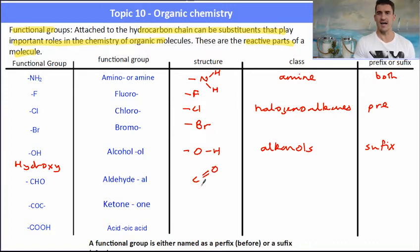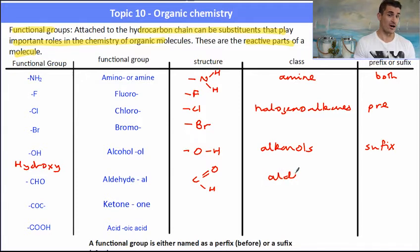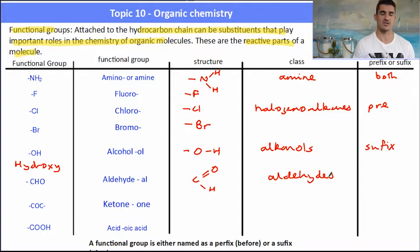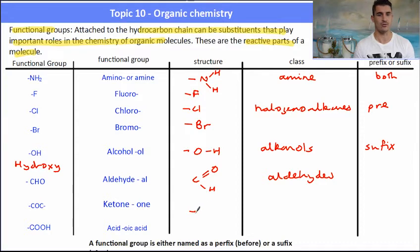An aldehyde has a carbon with a double bond to an oxygen and then a single bond to a hydrogen. Its functional group is called an aldehyde and its class is also known as an aldehyde. It's named as a suffix where we change the last part of the name to -AL, so for instance butanal, propanal, etc.